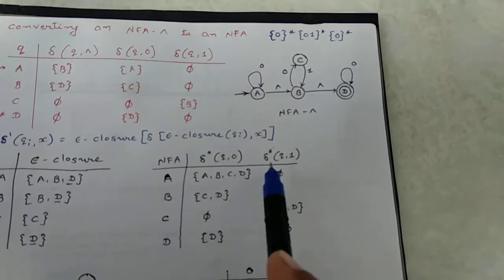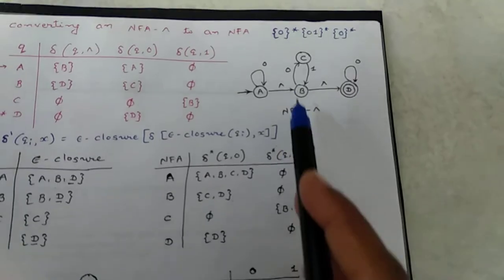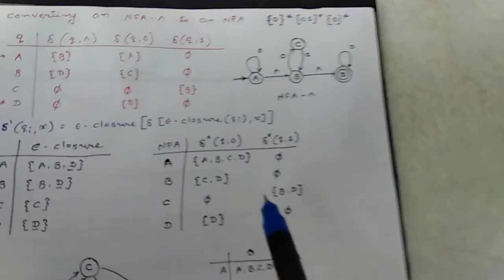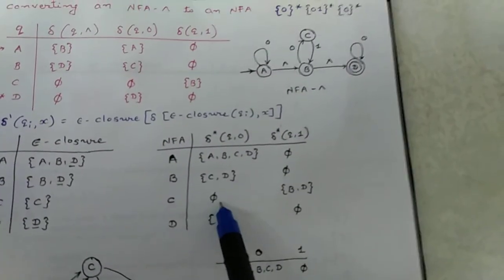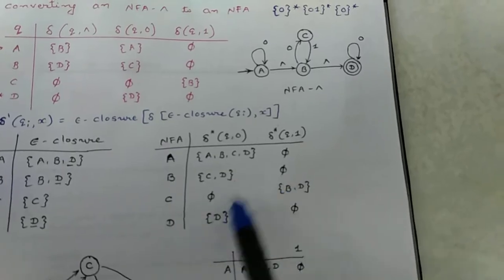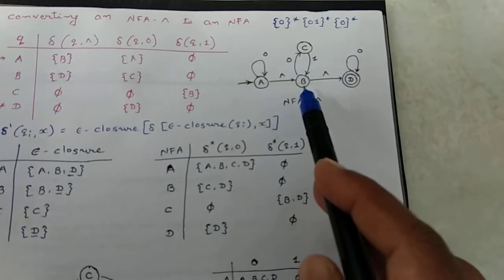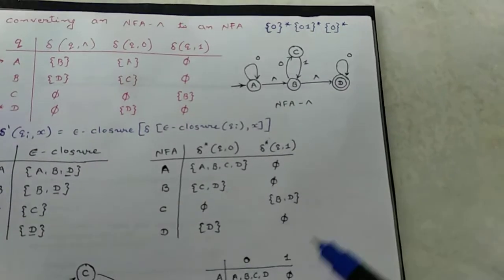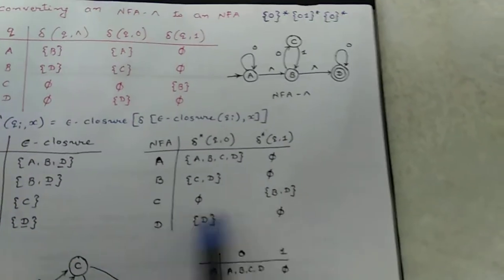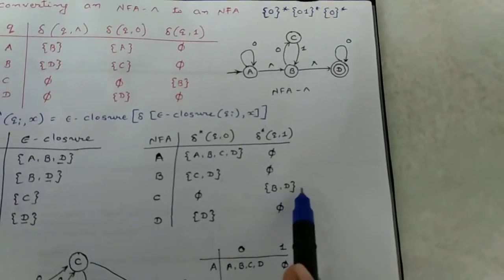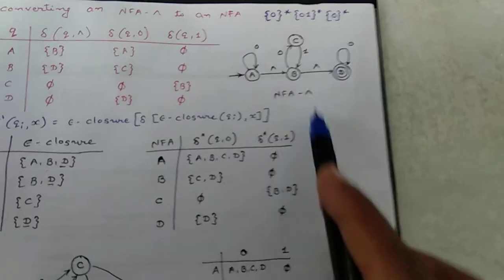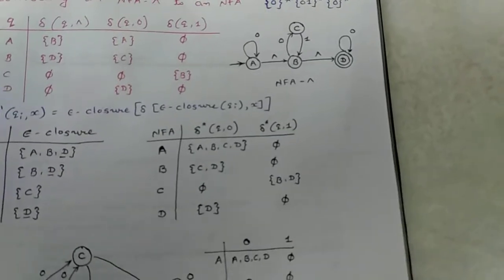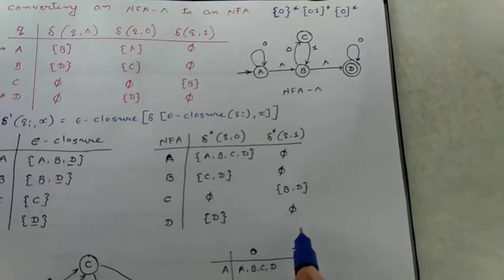For C to 0, there is no transition, so it is empty. For C to 1, there is one state B, and from B to epsilon you reach D. So C to 1 gives {B, D}. D to 0 gives state D, and D to 1 gives empty.